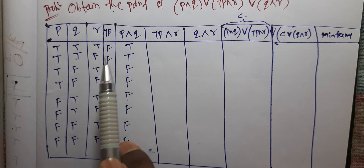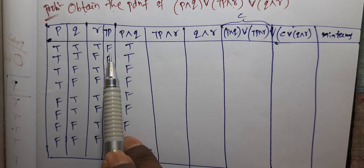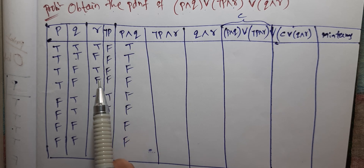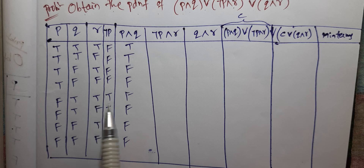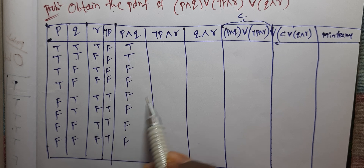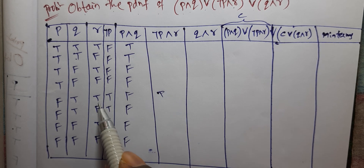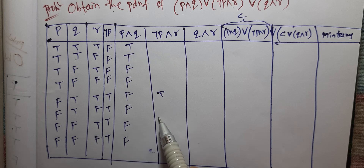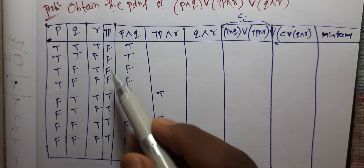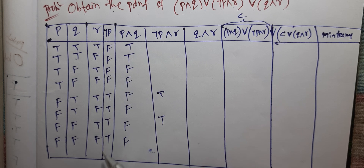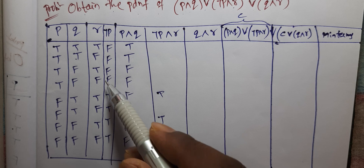Now negation P and R. Negation P and R — any two statements true gives true. If any remaining is false, result is false. Now negation P and R is true.